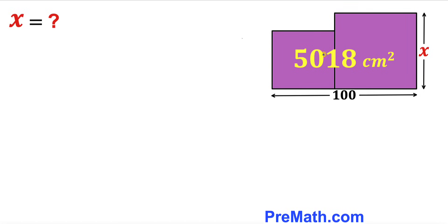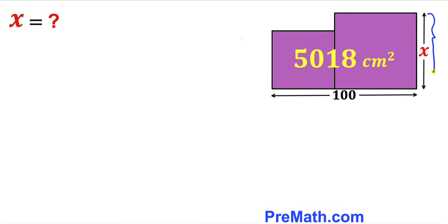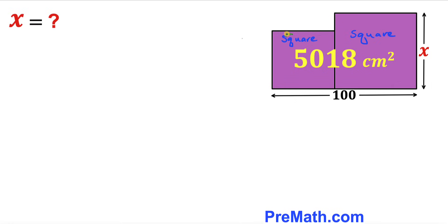In this video we have two purple squares put together. This horizontal length is 100 centimeters, the side length of the larger square is x, and the combined area for both squares is 5018 centimeters squared. Our task is to find the value of side length x. Keep in mind that both of these are squares.